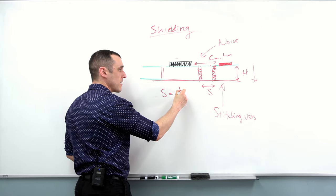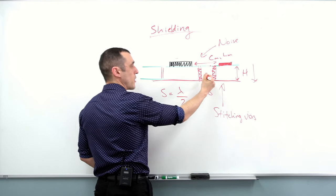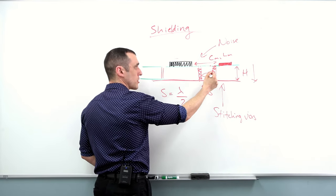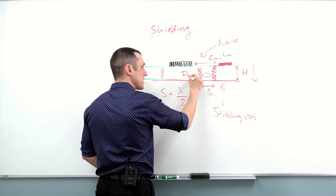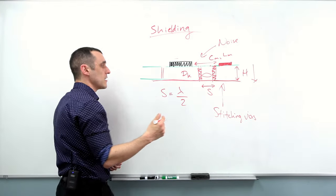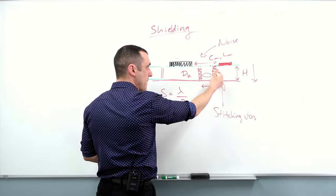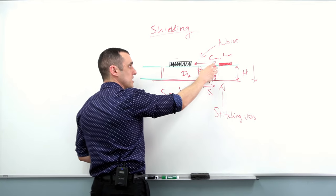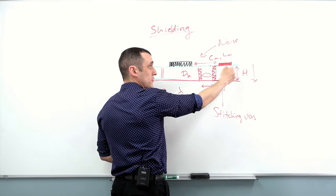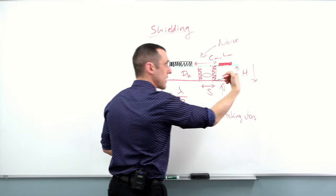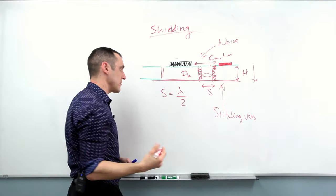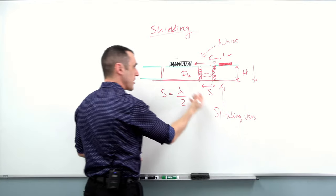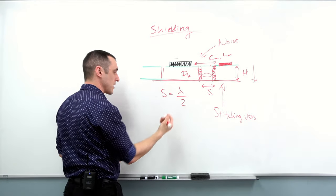Whenever s is equal to half a wavelength — where this wavelength is the wavelength inside this particular structure associated with the dielectric of the substrate — then you will have a strong resonance that builds up in this cavity, and that strong resonance could aid noise transfer into this interconnect, which could then get read out by the receiving component.